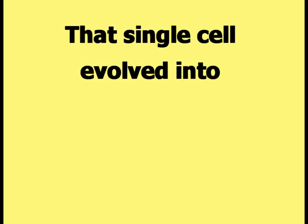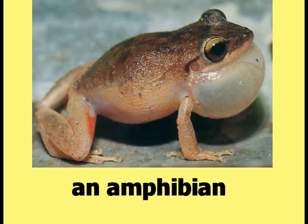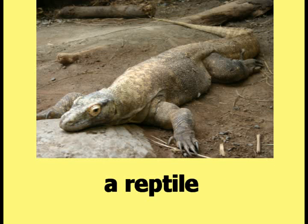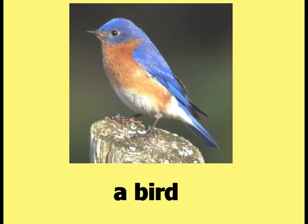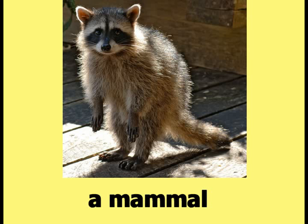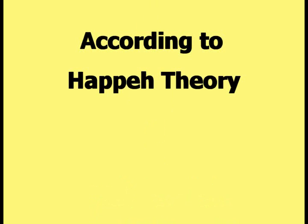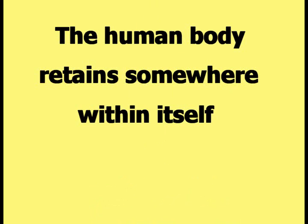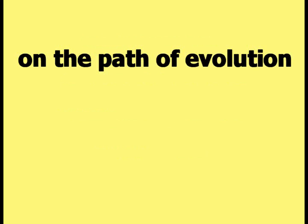That single cell evolved into a fish, an amphibian, a reptile, an insect, a bird, a mammal, and then into a human being. According to Happy Theory, the human body retains somewhere within itself one or more characteristics of everything it has ever been on the path of evolution.